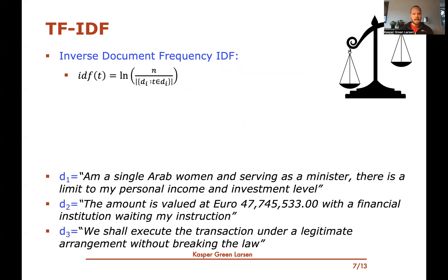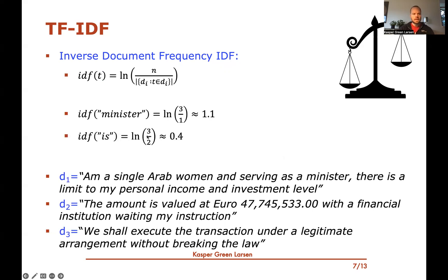To give an example, say I have three emails — document one, two, and three. For the word 'minister': there are three documents total, and only the first contains 'minister', so the IDF is log(3) ≈ 1.1. For the word 'is': it appears in documents one and two but not three, so IDF is log(3/2) ≈ 0.4. For the word 'a': it occurs in all three documents, so the IDF is log(3/3) = log(1) = 0. So different words get different inverse document frequencies.